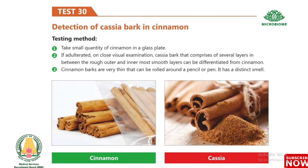Test 30: Detection of cassia bark in cinnamon. Take a small quantity of cinnamon in a glass plate. On close visual examination, cassia bark — which comprises several layers between the rough outer and smooth inner layers — can be differentiated from cinnamon. Cinnamon quills are very thin and can be rolled around a pencil or pen, and have a distinct smell.